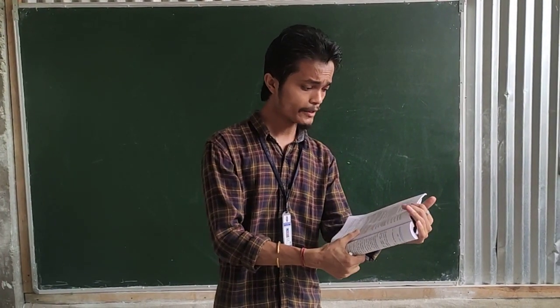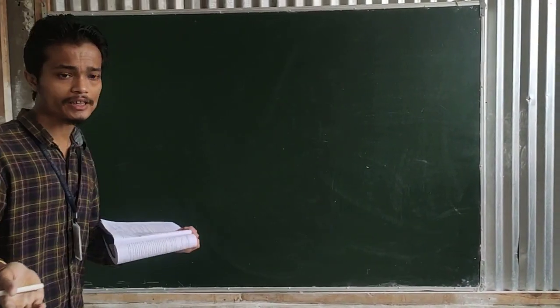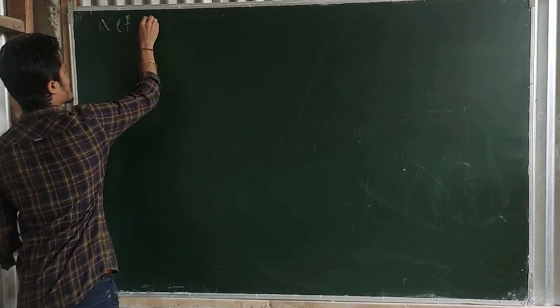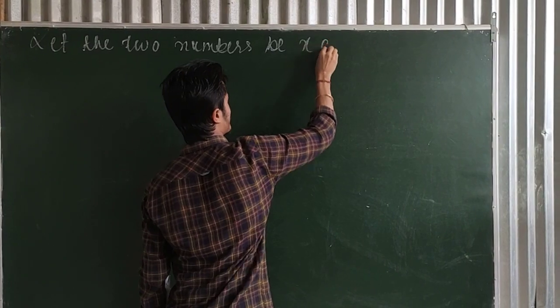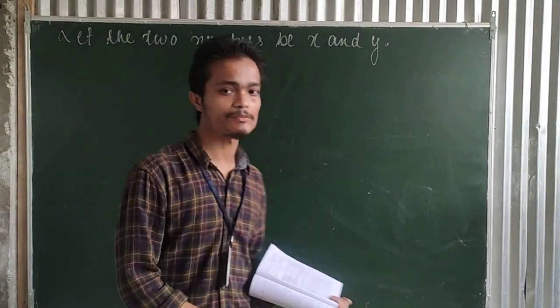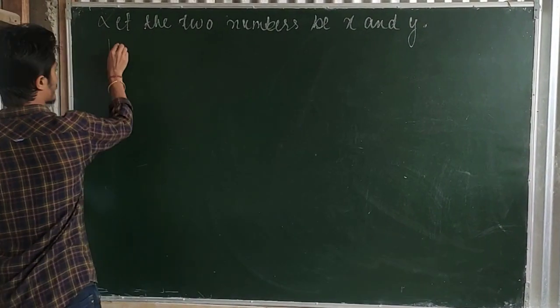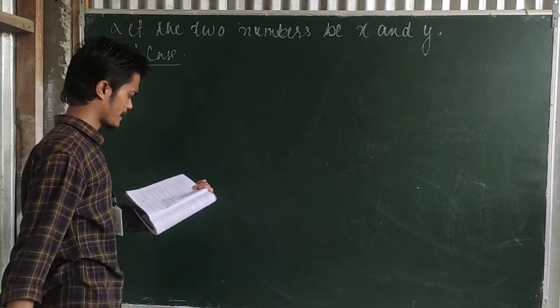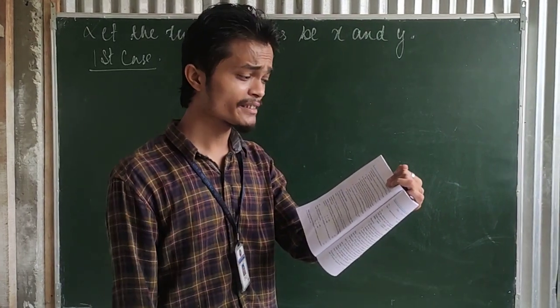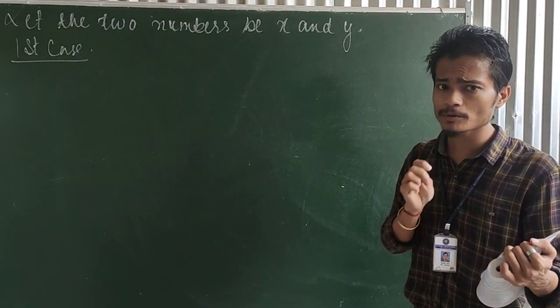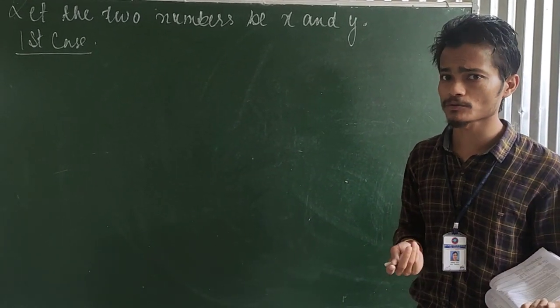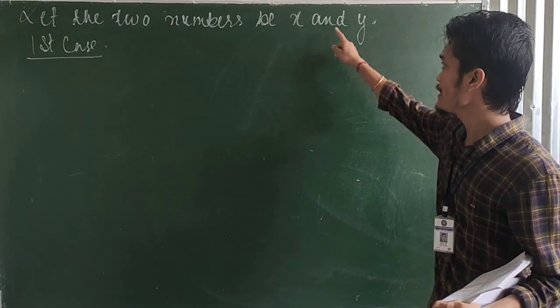The first question says the difference between two numbers is 26. We don't know which those two numbers are, so let the two numbers be x and y. In the first case, the difference between the two numbers is 26. That means one of the two numbers will be greater, so greater minus smaller equals 26. If it were smaller minus greater, it would become minus 26, but they have given us 26. So we have to choose which one is greater.